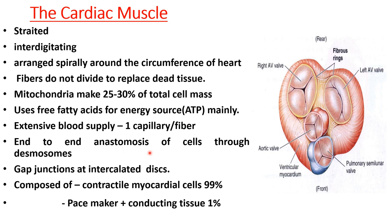End-to-end anastomosis of the cells occurs through desmosomes. Gap junctions are present at the intercalated discs. The cardiac muscle fibers are composed of 99% contracting cells, and also have pacemaker and conducting tissue making up 1% of the tissue. So 99% is contractile tissue and 1% is conducting tissue.